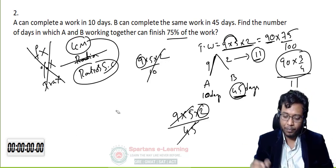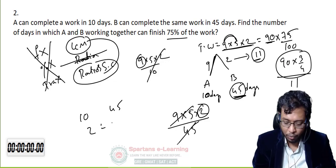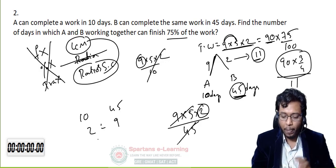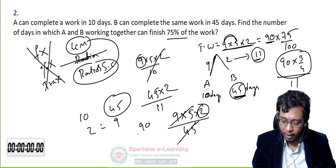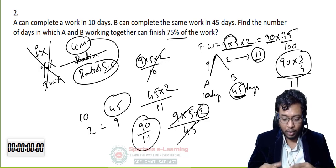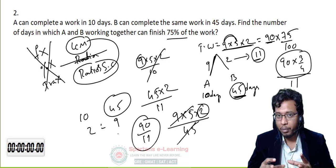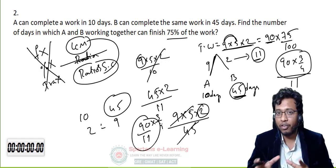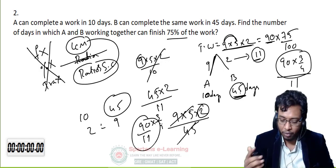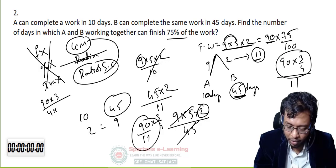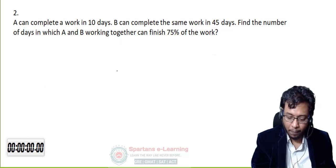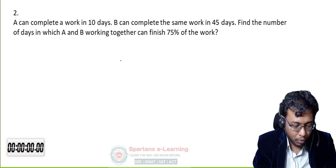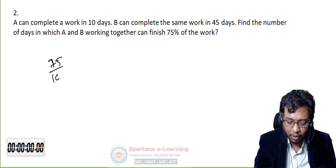By shortcut: 10 and 45 — what is the ratio? 5:9 (since 10 = 5×2 and 45 = 5×9, simplified ratio of times is 2:9). Pick the bigger number 45, multiply by smaller ratio, divide by sum. But first find total days for complete work: 90/11. Since the question asks for 75% of work, multiply by 3/4: (90/11) × (3/4) = 270/44.